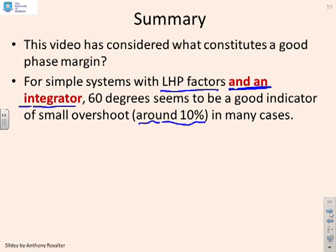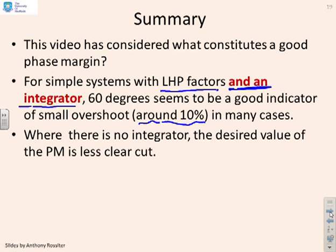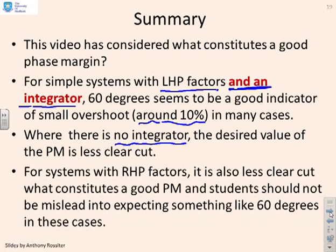I'm sure you can find a counterexample if you want, but for many simple examples, it seems to work quite well. However, if there was no integrator, the desired value of the phase margin was less clear-cut, even if you have just left half-plane factors, and you may need to look at other insights. Also, if you had right half-plane factors, it was less clear-cut what constitutes a good phase margin. The key thing is students should not be misled into expecting something like 60 degrees in those cases.